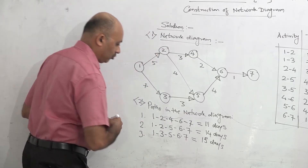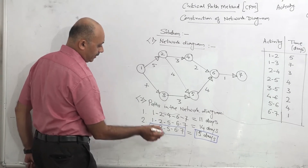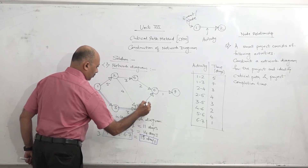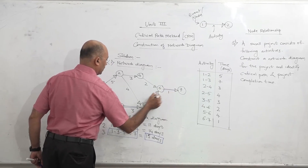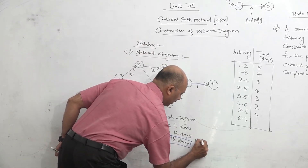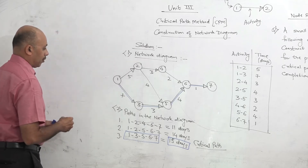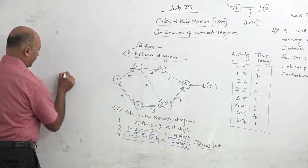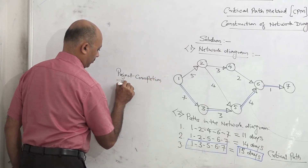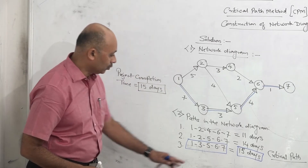The longest path is 15 days, and we highlight it with a double line: 1-3, then 3-5, then 5-6, and 6-7. This path is called the critical path. The meaning of critical path is that it is the longest path in the network. The project completion time is also equal to our critical path — so project completion time is equal to 15 days.